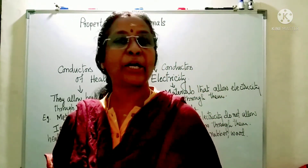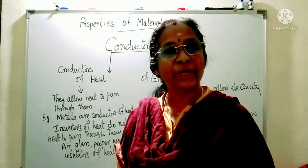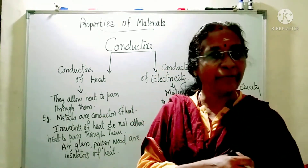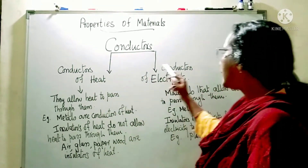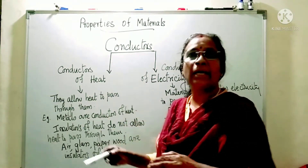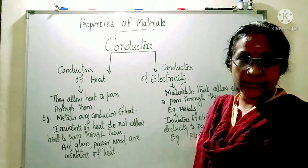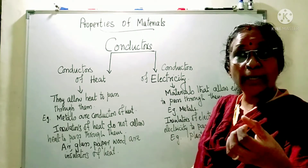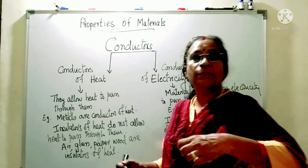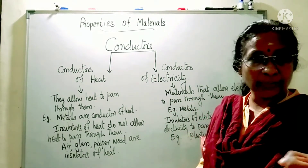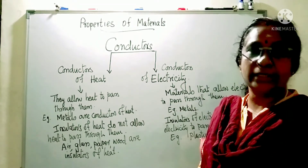Conductors are of 2 types: conductors of heat and conductors of electricity. Conductors of heat allow heat to pass through them. Almost all metals are good conductors of heat. At home, you might have seen a cooker or frying pans — they are made up of metals, but they have a handle made of plastic or wood, because those materials are non-conductors of heat — they are insulators of heat.